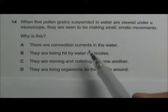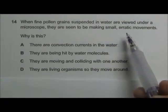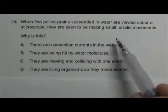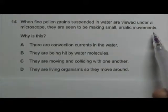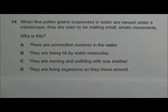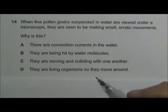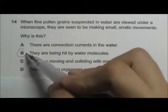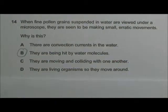Some pollen grains that are suspended in water viewed from a microscope, and the pollen grains are making small erratic movements. So why is this so? The pollen grains by right should not be moving on their own, so the reason why they are moving is because they are being hit by the water molecules. So the answer is B. This is actually an experiment to demonstrate Brownian motion, which is to investigate the movement of the water molecules.